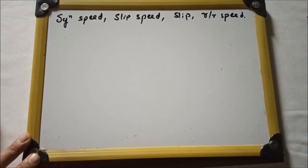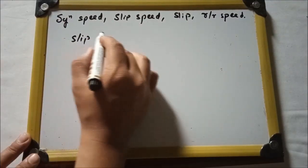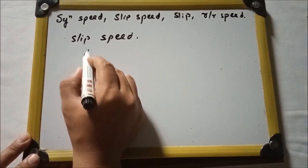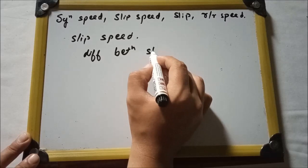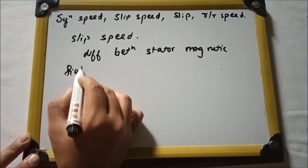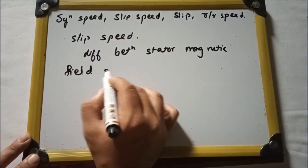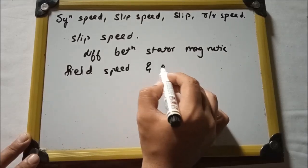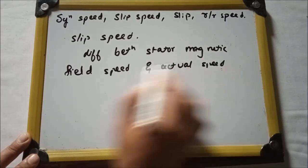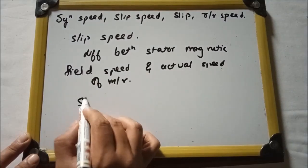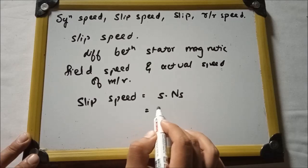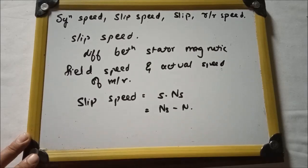Now, what is slip speed? Slip speed is the difference between the stator magnetic field speed and the actual speed of the motor. It is given as: slip speed = s × ns, which can also be written as ns − n.